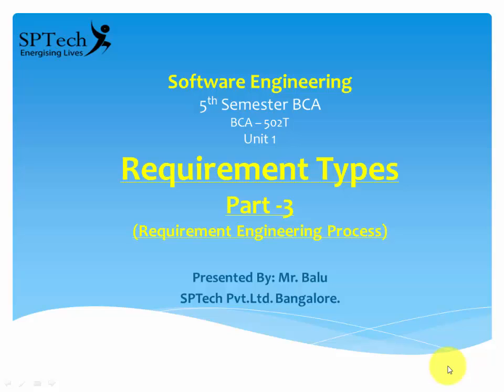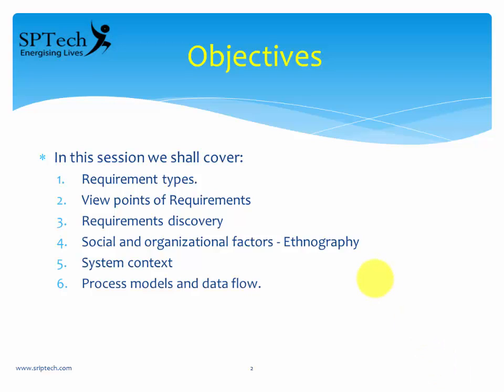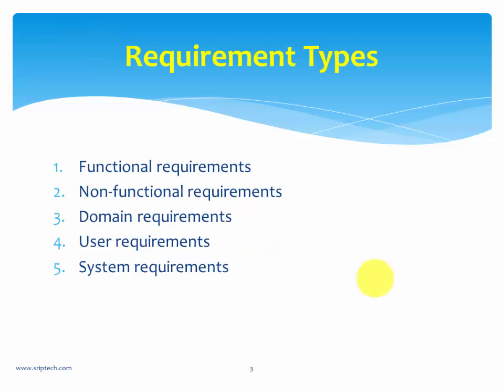Hi, welcome back. This is Baloo here. We want to discuss part 3 of the requirement engineering process. The session we are going to do is called Requirement Types. We're going to talk about different types of requirements, viewpoints of requirements, requirements discovery, social and organizational factors called ethnography, a brief introduction to system context, and finally what is a process model and a data flow.